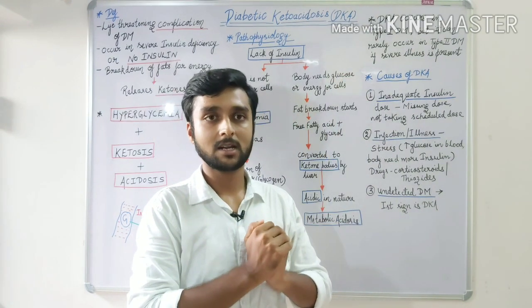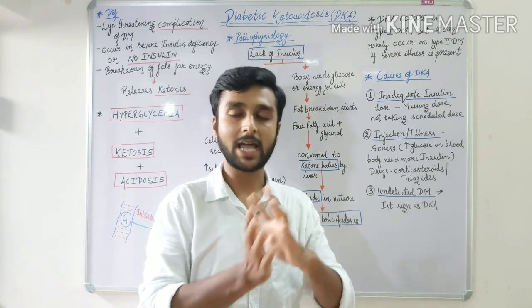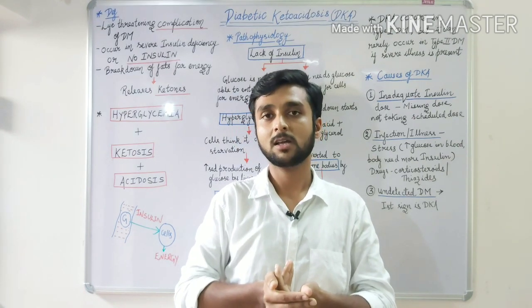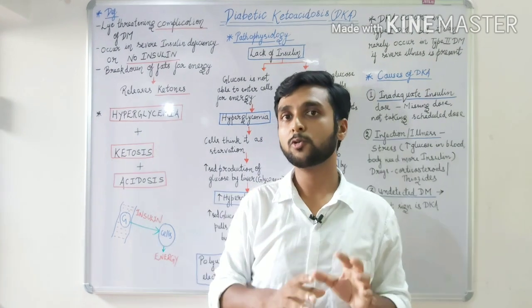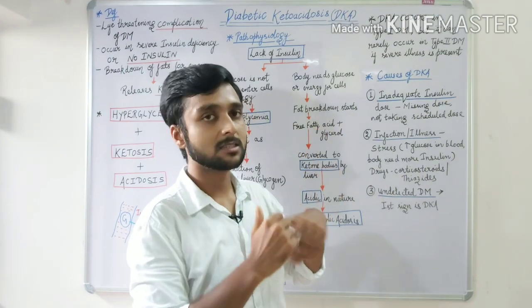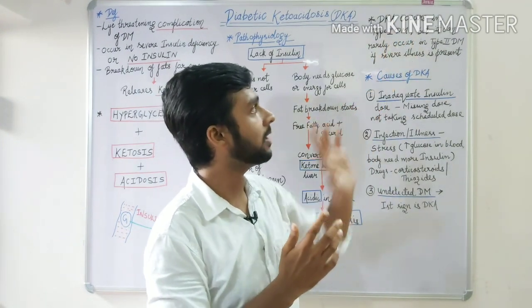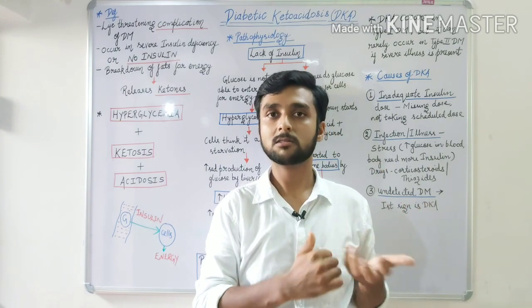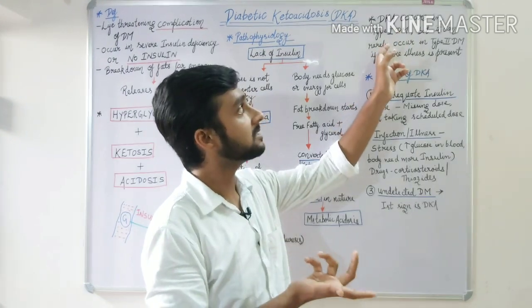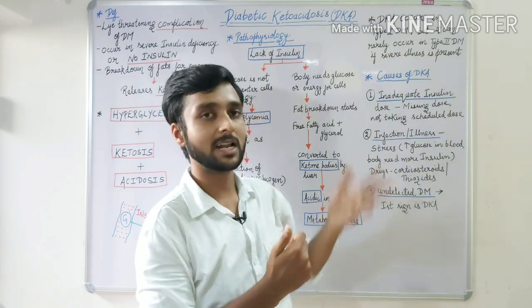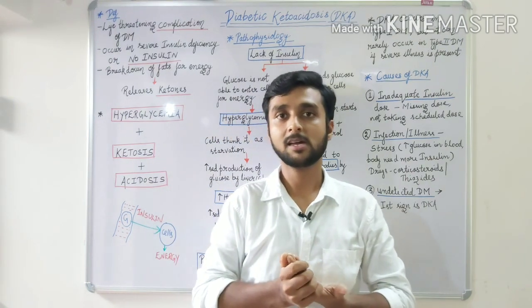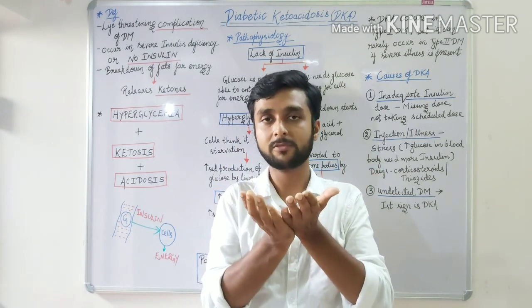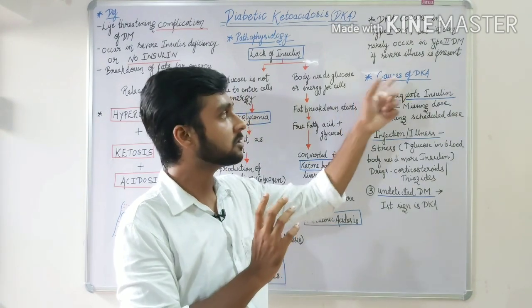An important aspect: diabetes mellitus is of two types — type 1 and type 2. Type 1 is seen in children, type 2 in adults. In type 1, there is destruction of beta cells and an absolute deficiency of insulin, so DKA is usually seen as a complication of type 1 diabetes mellitus. In type 2, it is rarely seen because insulin is present but the body is resistant to it. However, DKA can also rarely occur in type 2 diabetes mellitus if the patient has a severe illness, because during severe illness glucose levels rise greatly and the present insulin cannot meet the demand.